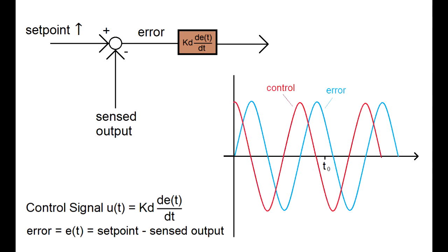As we can see here, the control signal is leading the error signal. So before the error goes up, the control goes up. And before the error swings back down, the control has already been there.